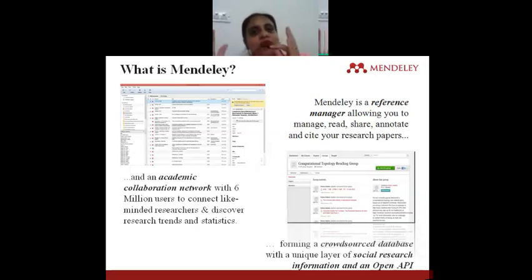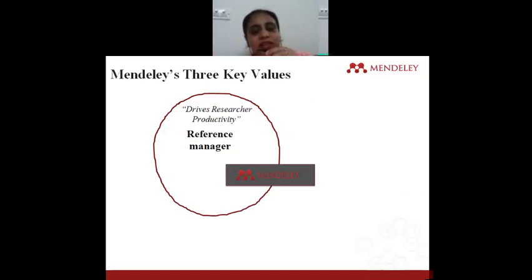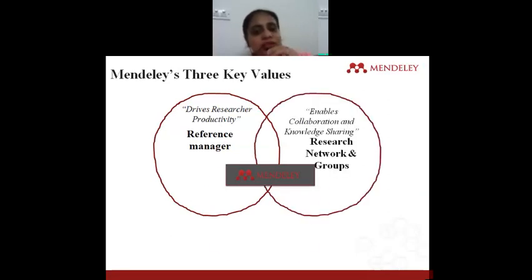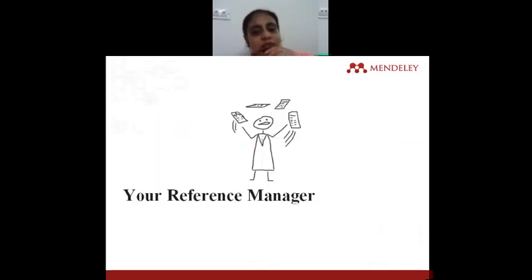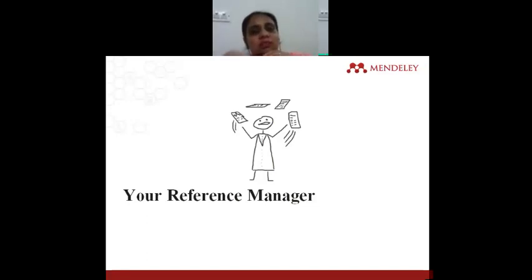Simply speaking, Mendeley has three basic functions. It is a reference manager that allows you to manage, read, share, annotate and cite your research papers. It is also an academic collaboration network with 6 million users to connect like-minded researchers and discover research trends and statistics. And it forms a crowd-sourced database with a unique layer of social research information and an open API.